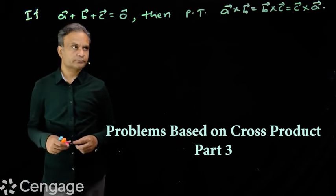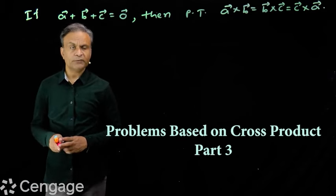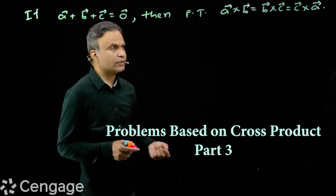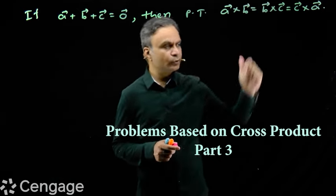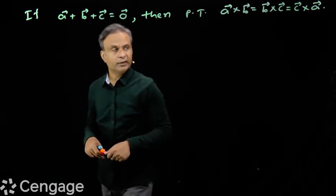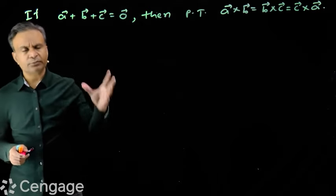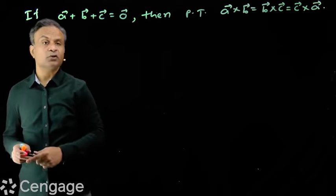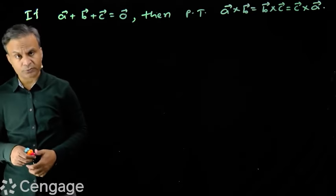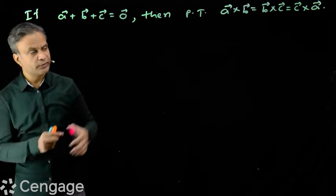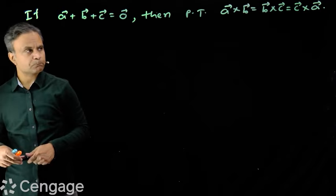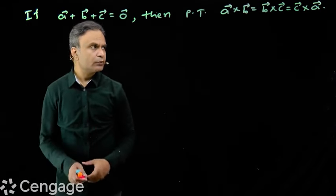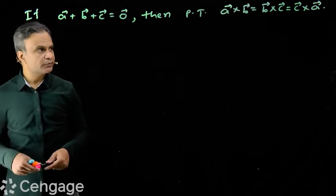Look at this equation. If the sum of vectors a, b and c is a null vector, then prove that a cross b is equal to b cross c is equal to c cross a. This is one of the important properties and standard results of cross product. Remember this result as a property — we have many questions based on this result.